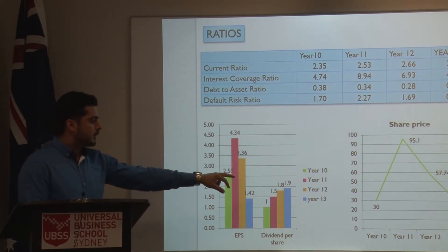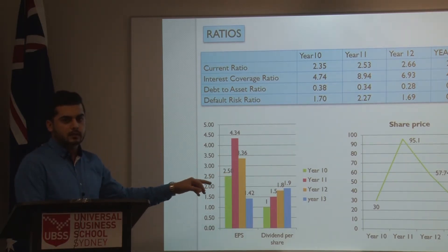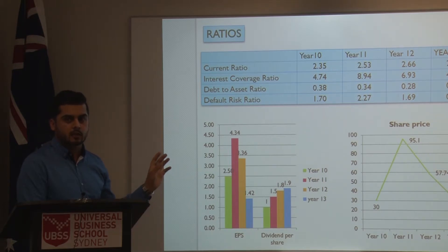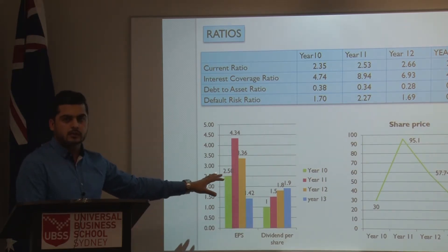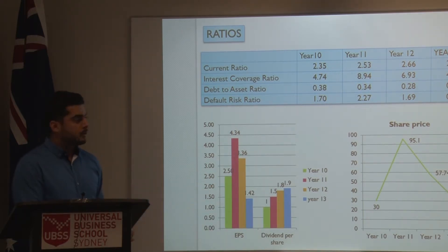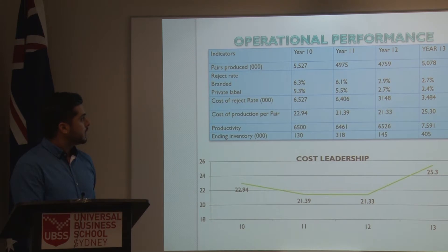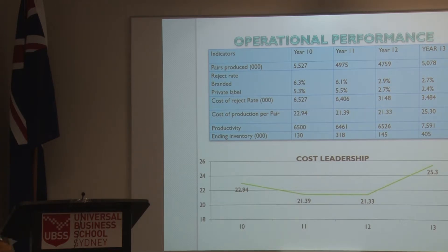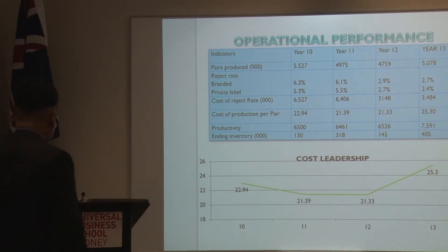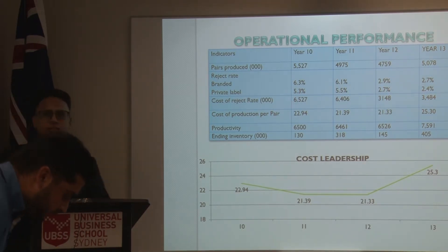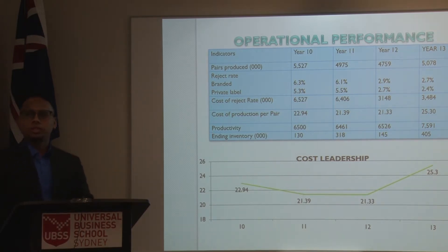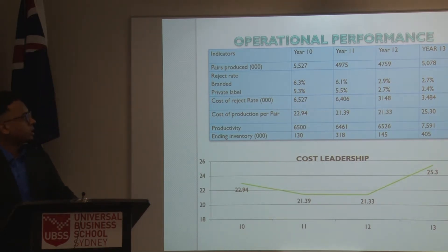We are only giving extra dividend this year because next year we may need some extra cash for operations. So only this year we are giving them extra dividend. Now over to the next — the operations manager.